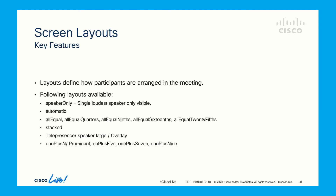Fourth layout is telepresence layout where there is a big active speaker pane and a film strip of few inactive speakers at the bottom. Fifth is One Plus N layout where there is one big active speaker pane and smaller panes under and on the right side of the big pane.